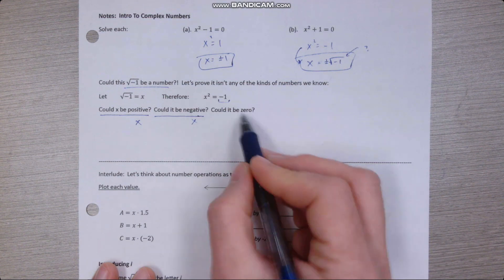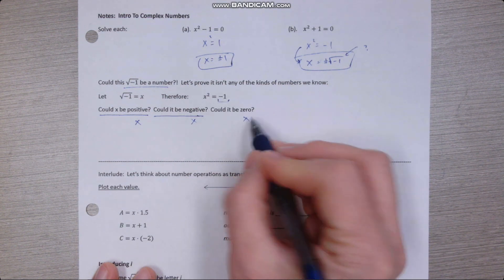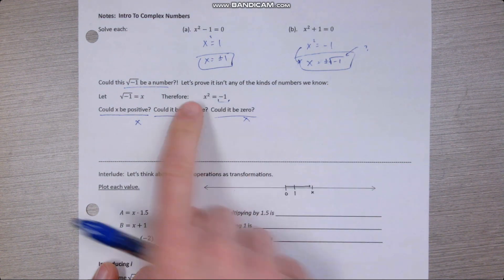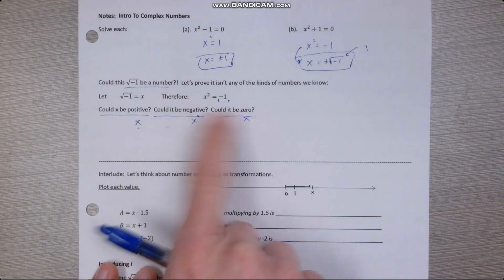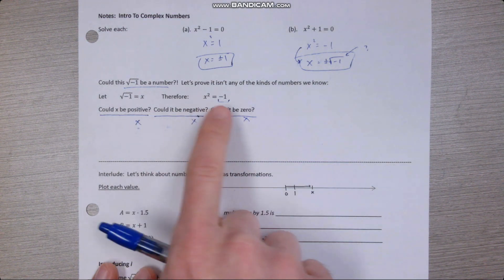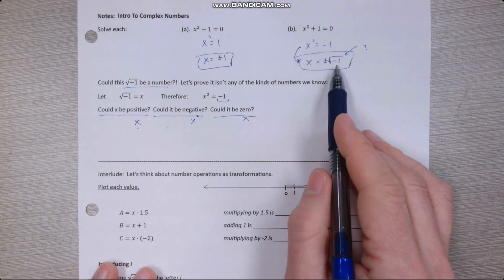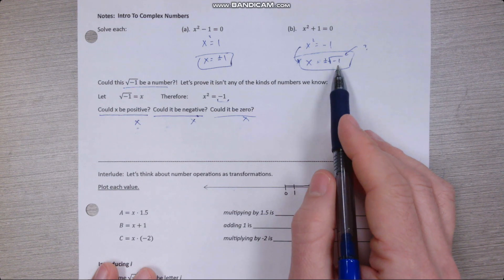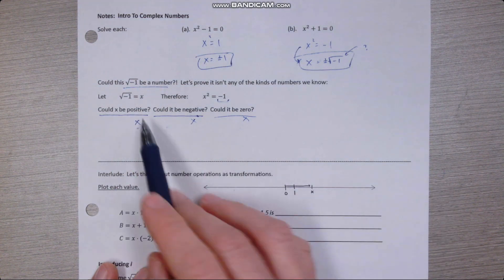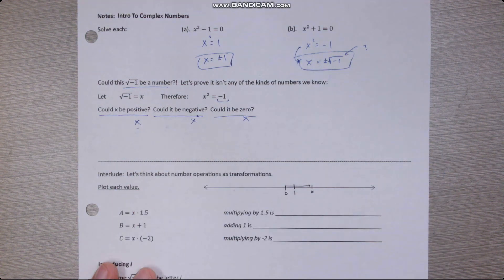And zero, if I square it, is just zero. So just by imagining which of these three types of number would satisfy the equation, it seems that none of them would. So if we're going to decide that square root negative one is a number, it's definitely a new kind of number that's not positive and not negative and not zero.